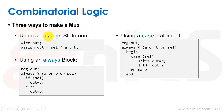We can use an assign statement. We have a wire called out, and we use assign — which sits outside of any always block — and we have: out equals cell ? a : b. This is the ternary operator: if cell is 1 then we return a, else we return b. That's a concise way to write a mux.